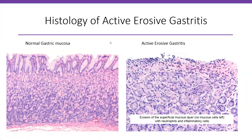When active gastritis goes on a bit longer, you can have active erosive gastritis. The normal gastric mucosa surface is completely gone — it is all damaged with mixed inflammatory cells including neutrophils.